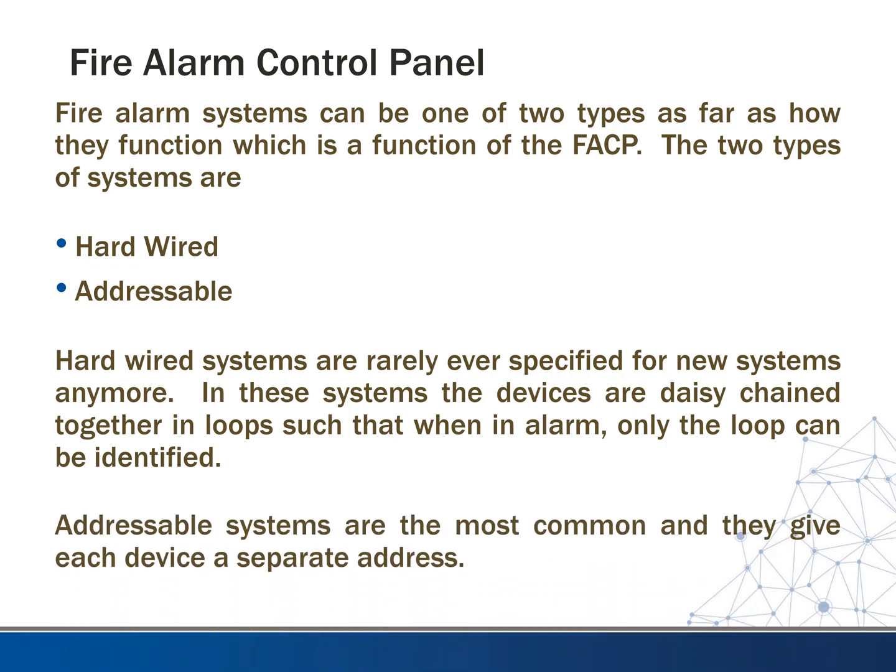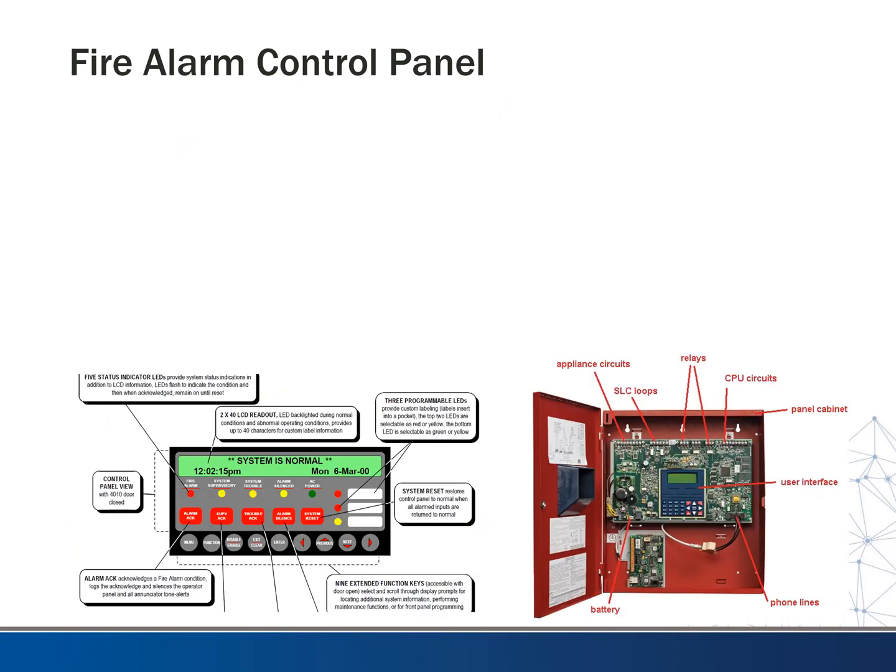That's very different from an addressable system. With an addressable system, each device has its own address, much like an IP address on a computer. In this case, you can get much more granular in narrowing down where the alarm is — it can tell you the exact device. If you have it set up correctly and your information is up to date, you can know exactly where that device is in your system. That's a pretty nice feature.